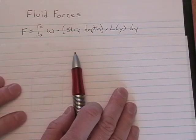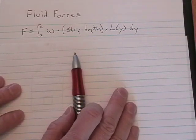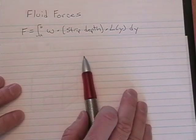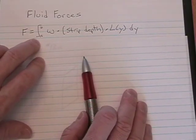To calculate the fluid force applied to a vertical thin plate, we have this formula. Force equals the integral from A to B.